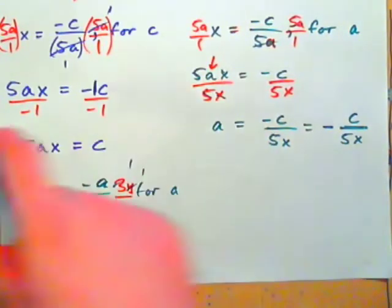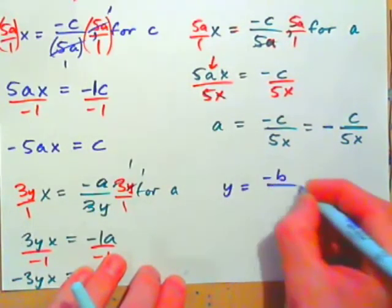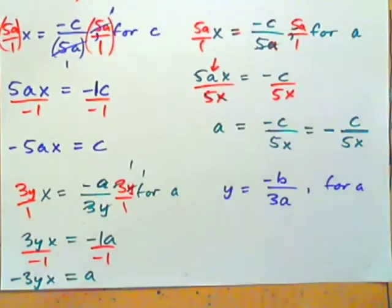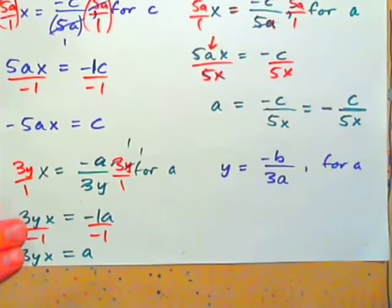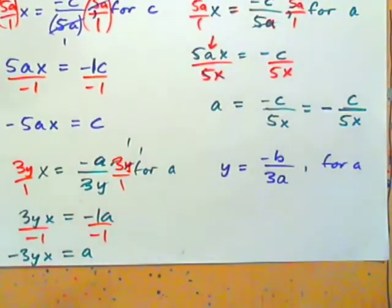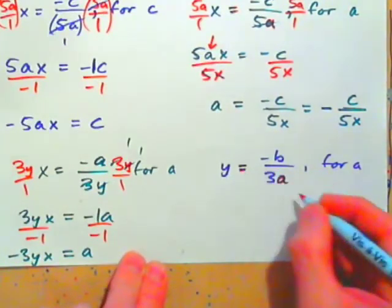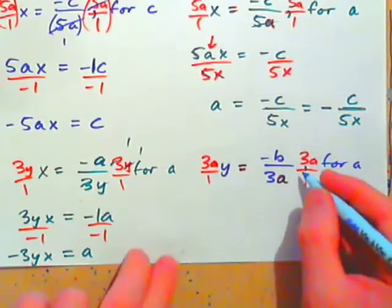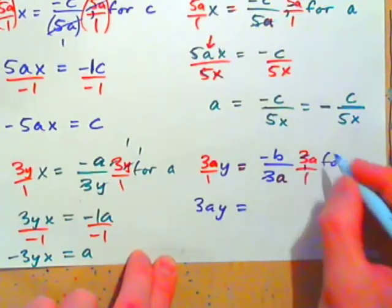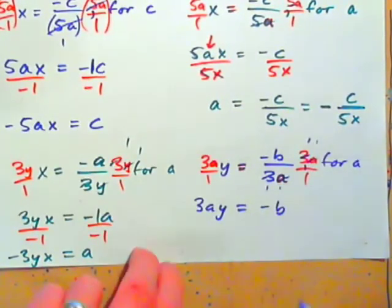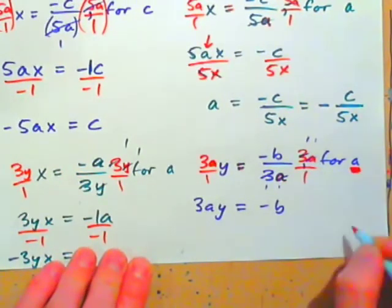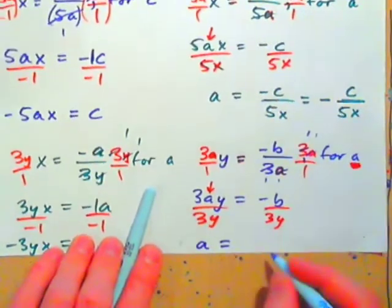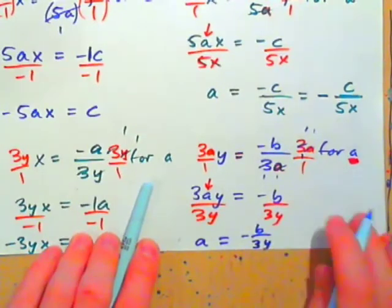For fun: Y equals negative B over 3A — solve for A. Get rid of the fraction by multiplying both sides by 3A. On the left we get 3AY; on the right the 3's and A's cross-cancel, leaving negative B. We're looking for A, so divide by 3Y on both sides, and we have A equals negative B over 3Y.